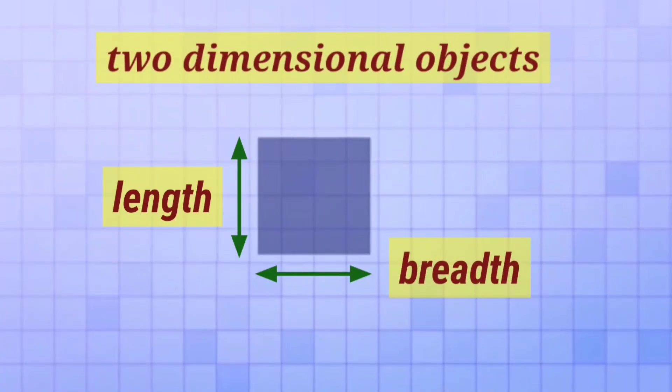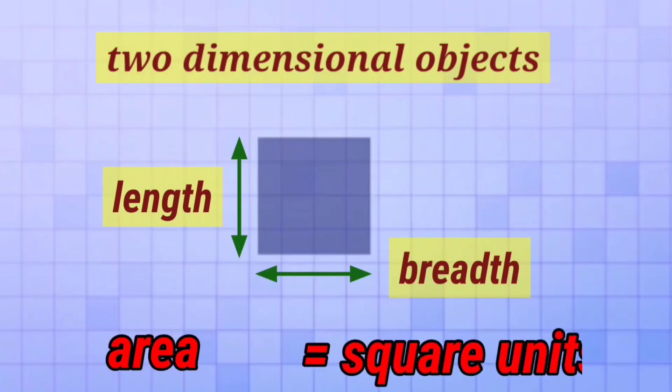These objects are measured by two-dimensional quantity, that we call area. This figure having equal sides is a square, and the area of all the two-dimensional objects is measured in square units.